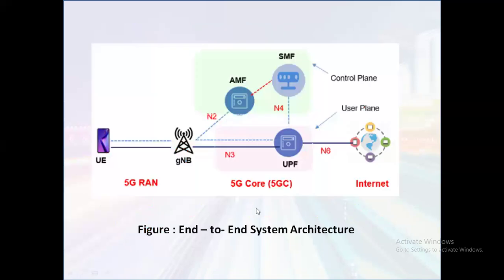This diagram of the end-to-end system architecture consists of the 5G RAN and the 5G Core (5GC), as well as the internet. It also includes the UE, gNB, and UPF — the user plane function. The control plane function comprises the AMF, SMF, and UPF components.